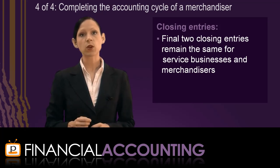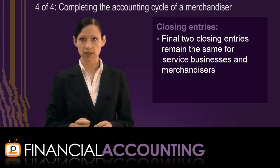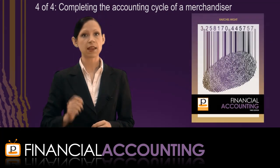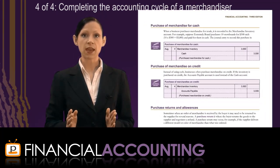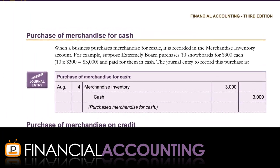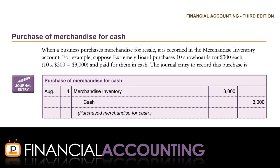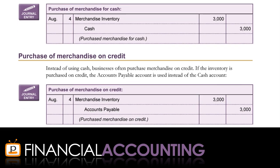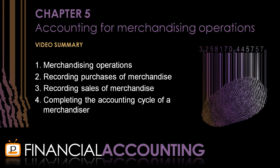This summary has focused on a selection of the basic transactions of a merchandiser. You should carefully study the chapter in your Pedisco textbook, where you'll find additional variations on the transactions presented here, which you should study until you can confidently record all the journal entries in the chapter. So that's Chapter 5, Accounting for Merchandising Operations. The key topics were Merchandising Operations, Recording Purchases of Merchandise, Recording Sales of Merchandise, and Completing the Accounting Cycle of a Merchandiser.